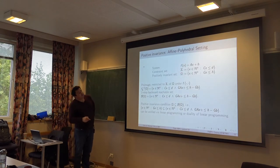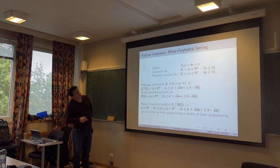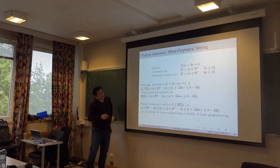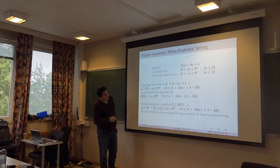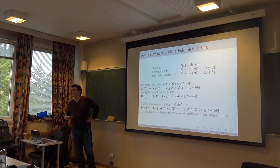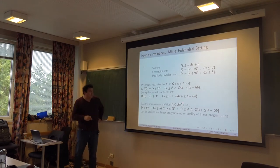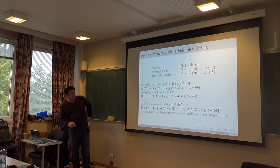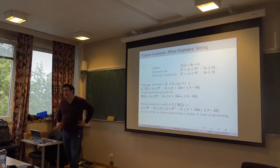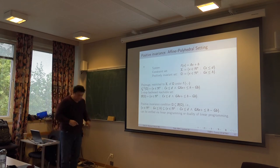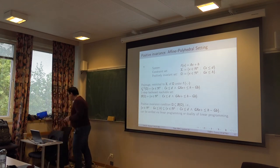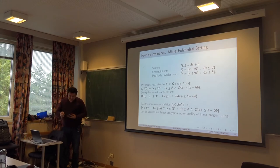For affine systems with polyhedral constraints, computing the pre-image is very easy. All you do: you take Ax + B, plug it inside Gx ≤ H, rewrite it, and you see that you put the matrices together to obtain the one-step backward reachable set as a polyhedral set. The positive invariance condition, Ω ⊆ B(Ω), becomes this condition, which can be verified by solving linear programming or duality of linear programming.